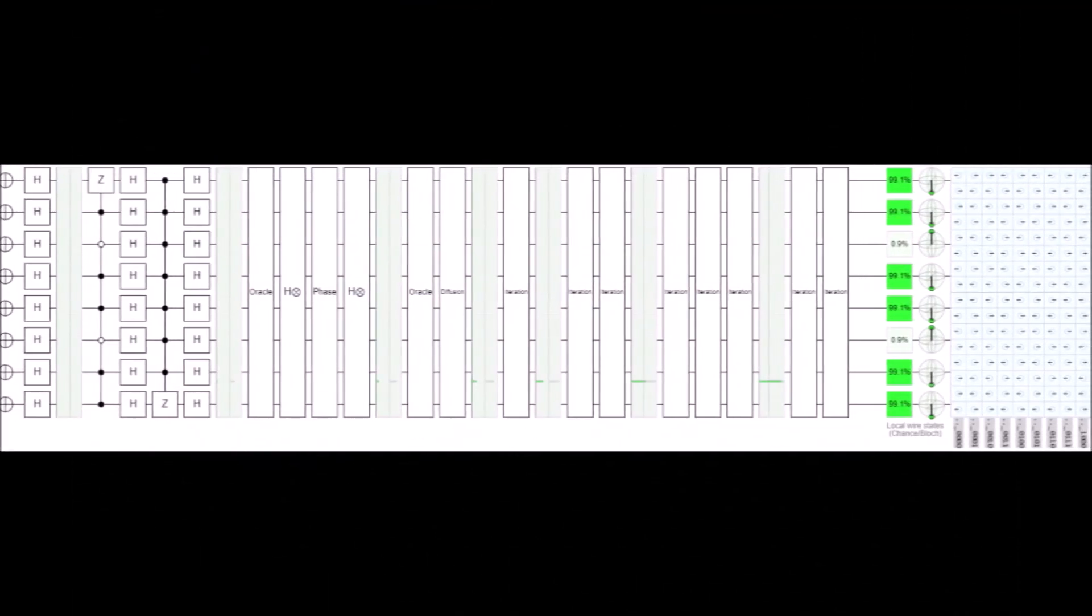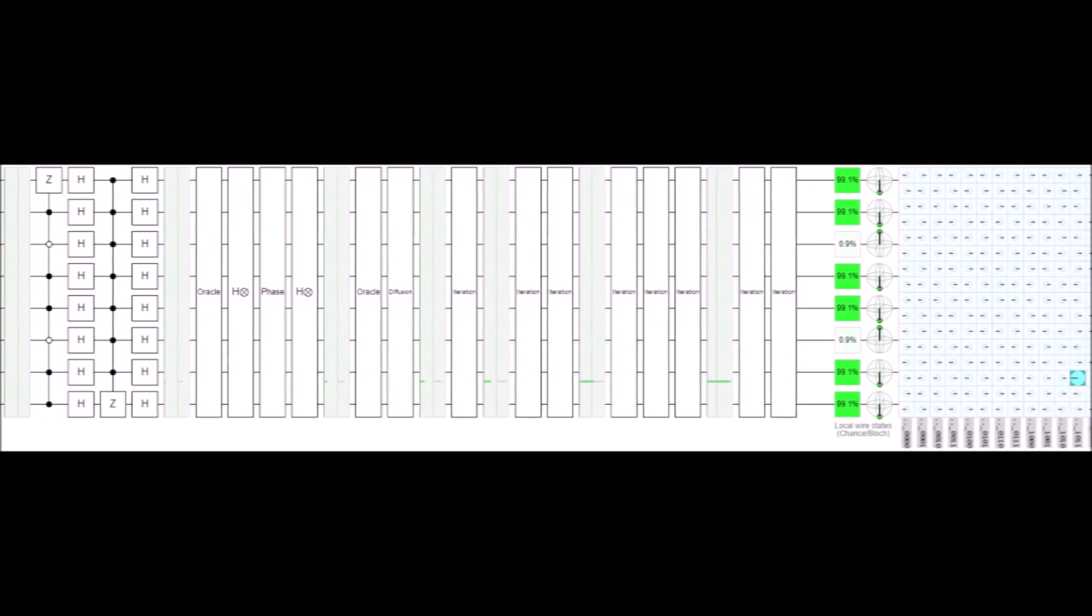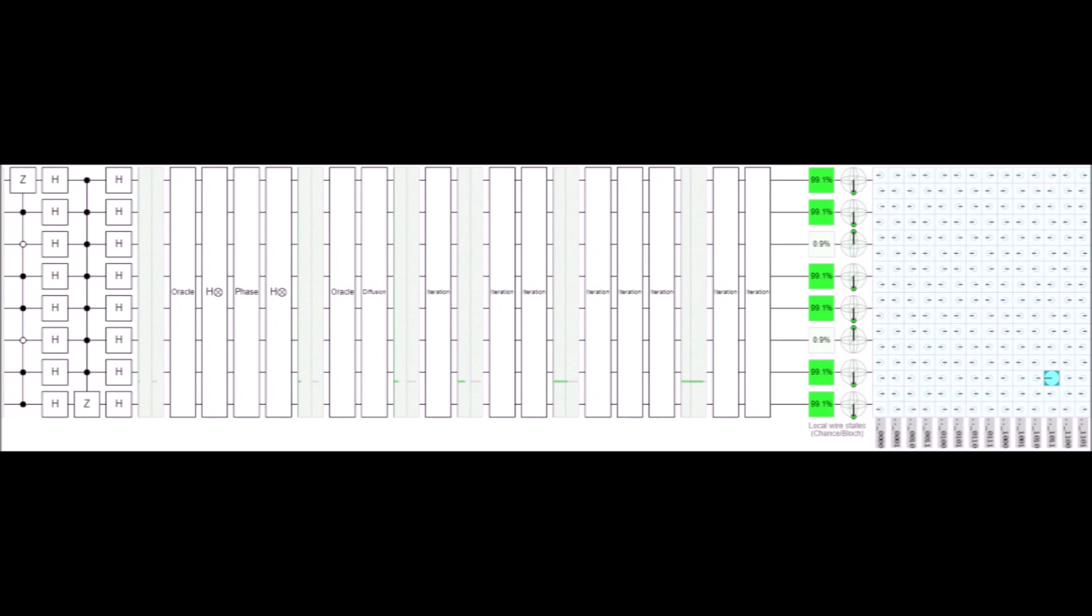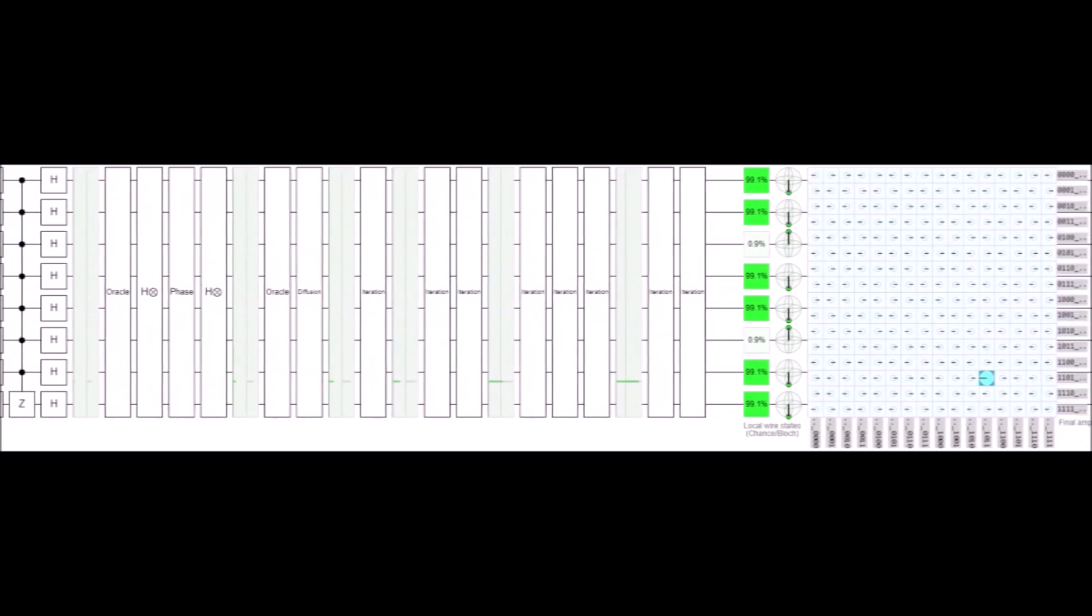In circuit form, this is what Grover's algorithm looks like. It's basically the Hadamard transform, then the Grover iteration, and then I iterate over that Grover iteration a bunch of times to isolate that blue value you see.